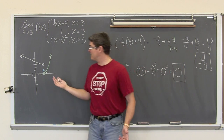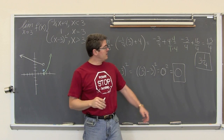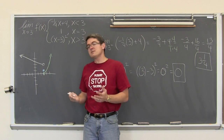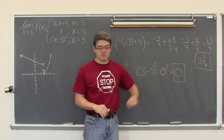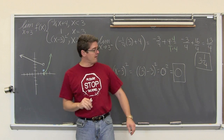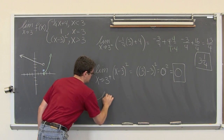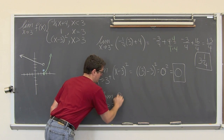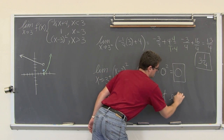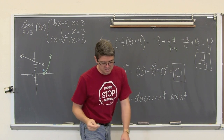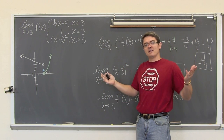As we approach the value of 3 from the left, our limit is 3 and a quarter. And as we approach the value of 3 from the right, we are approaching a y value of 0. Our left and right-hand limits are different. So the limit as x approaches 3 of f of x does not exist.